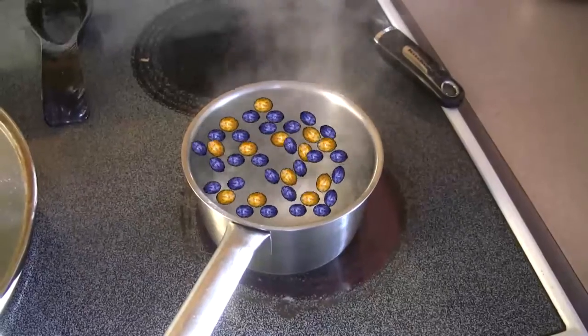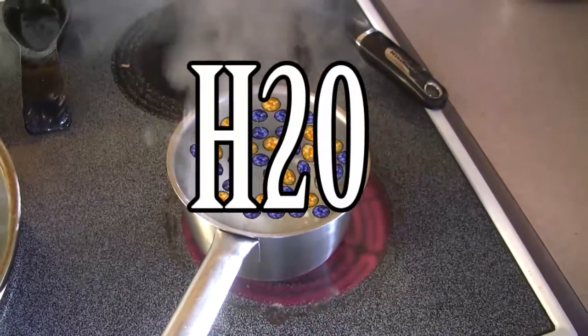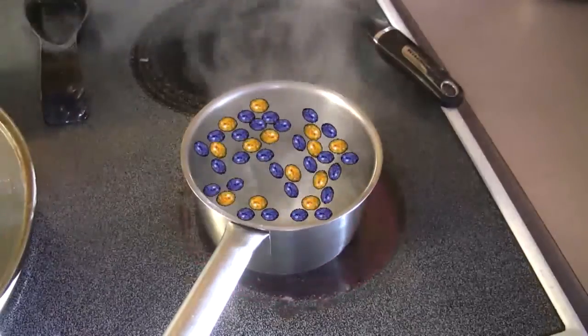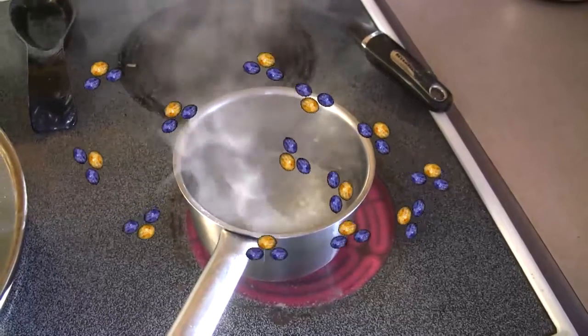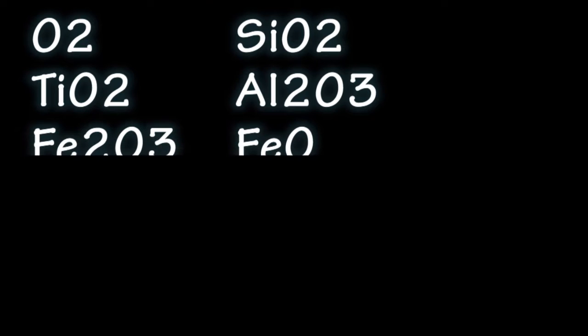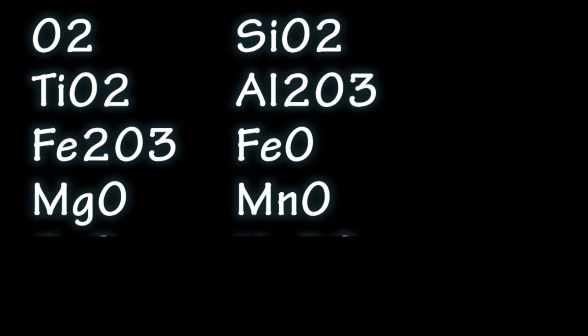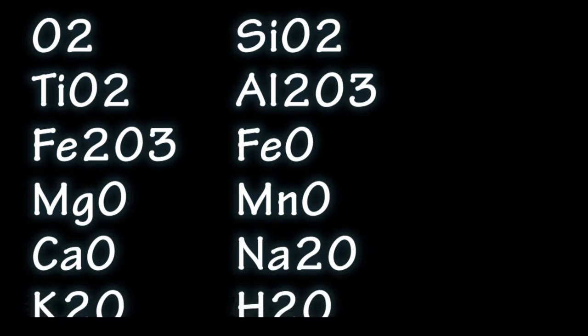As for the chemical components, our boiling water had only H2O, which though it is made of three atoms, is considered a single chemical component due to its tendency to hang together. The complete list of major components that we will meet in the Earth's crust are as follows: O2, SiO2, TiO2, Al2O3, Fe2O3, FeO, MgO, MnO, CaO, Na2O, K2O, H2O, and CO2.